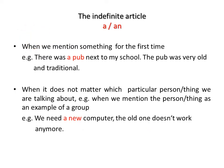Let's begin with the indefinite article. We use the indefinite article when we mention something for the first time. For example: 'There was a pub next to my school. The pub was very old and traditional.' Also, we use articles 'a' or 'an' when it doesn't matter which particular person or thing we are talking about — when we mention the person or thing as an example of a group.